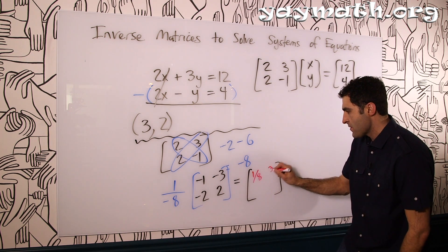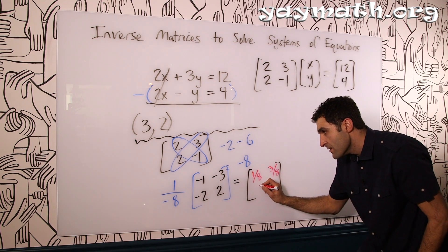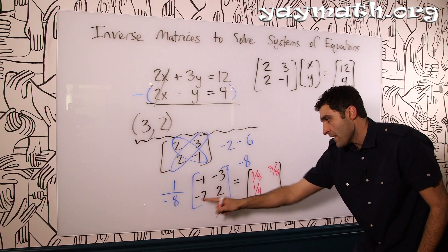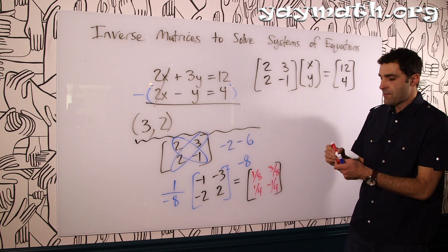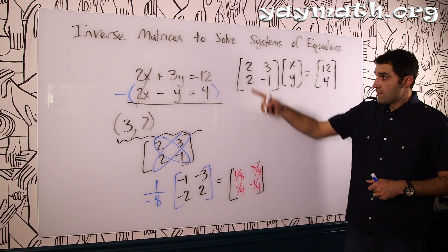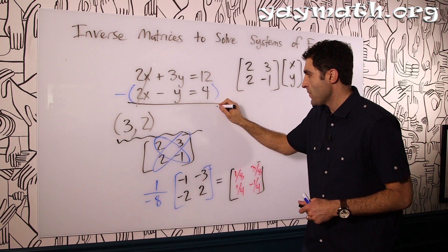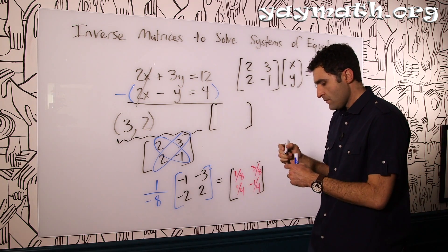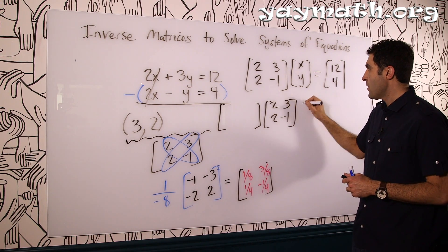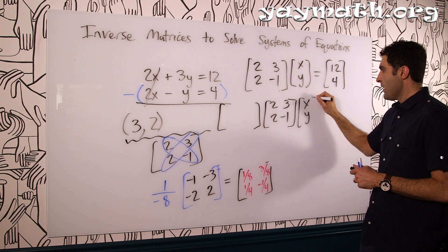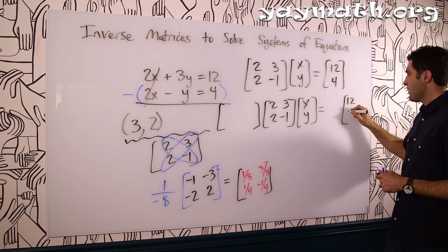And then this distributes through: this is 3/8, this distributes here, this is 1/4, and then this is negative 1/4. So this is the inverse of this 2 by 2. So let's write it on the left of this. We have 2, 3, 2, negative 1, times x, y equals 12 and 4.